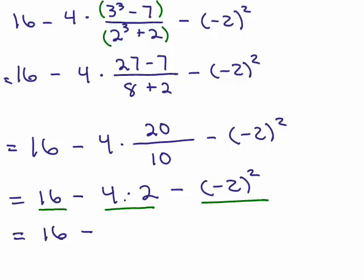So 16 minus, well, 4 times 2 is 8, and the reason we could do that is remember the last thing we do is subtraction. And negative 2 to the second power, that means, by the way, on the side, negative 2 times negative 2. So what's that going to give you? Positive 4.